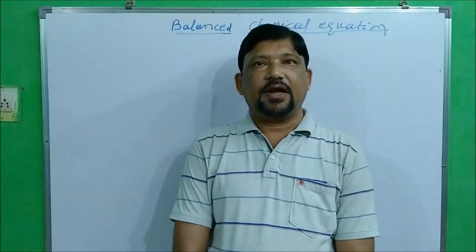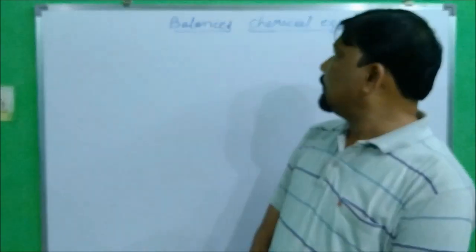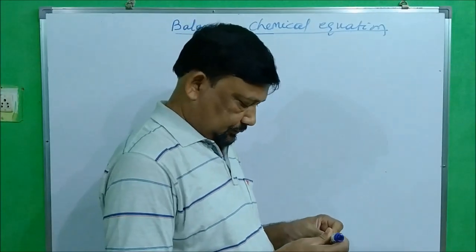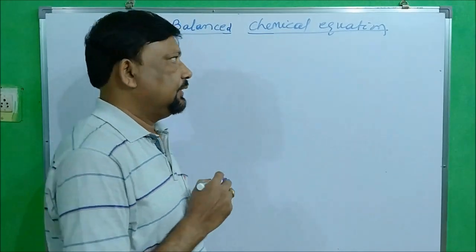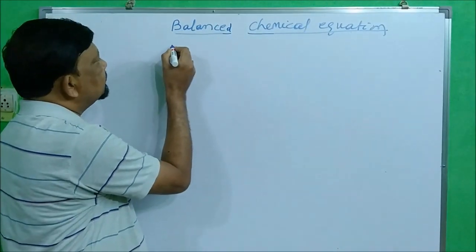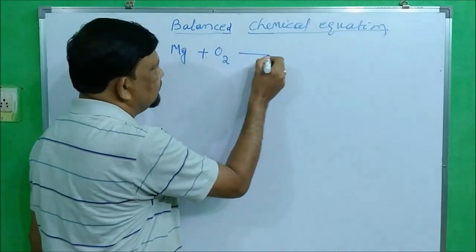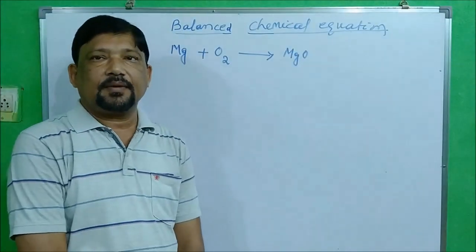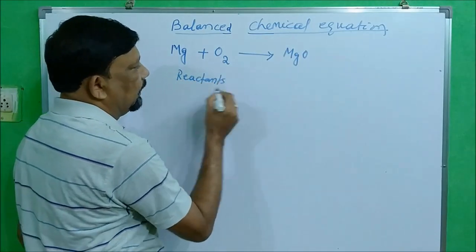Hello, welcome to the science classroom. Today's topic is balanced chemical equations, which is important for Class 10th, first chapter. Let's review the previous class activity: magnesium ribbon burning. The equation is magnesium ribbon burns in the presence of oxygen to give magnesium oxide. This is your reactant side and this is your product.